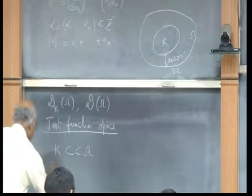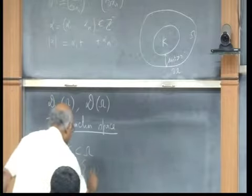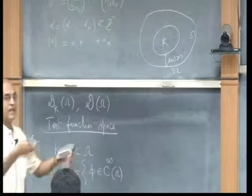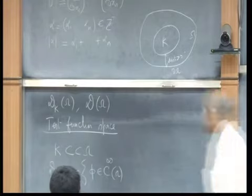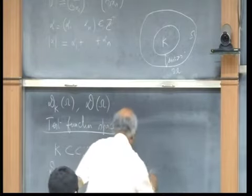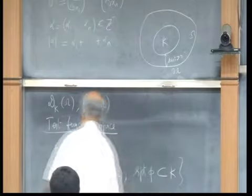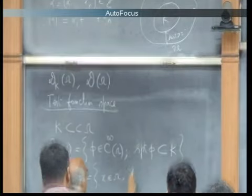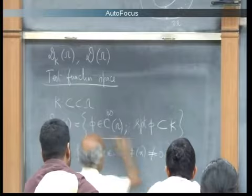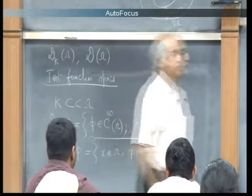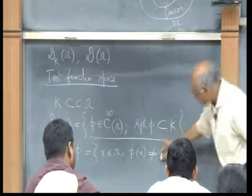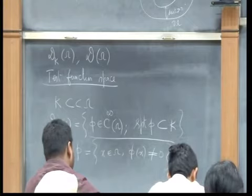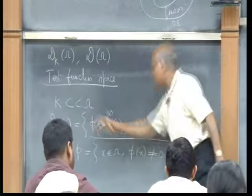D_K(omega) consists of all functions which are C-infinity on omega, meaning all classical functions admitting as many derivatives as desired, and whose support is contained in K. The support of phi is the closure of the set where it is not zero—it is always a closed set. Since we are dealing with classical objects, the pointwise values are indeed used, and the support is contained in omega.